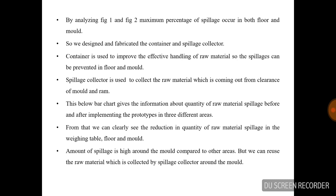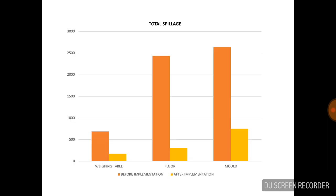The spillage collector is used to collect the raw material coming out from the clearance of the mold. This chart gives information about the quantity of raw material spillage before and after implementation of the prototypes in different areas. From that, we can clearly see the reduction in quantity of raw material spillage on the weighing table, floor, and mold. The amount of spillage is still high around the mold compared to other areas, but we can reuse the raw material collected by the spillage collector around the mold.